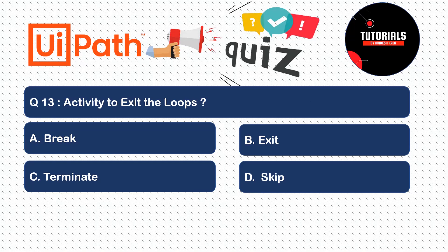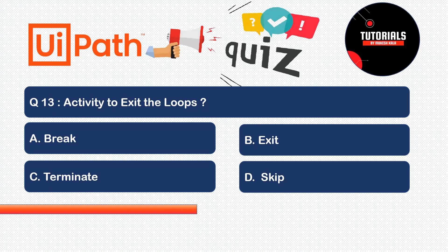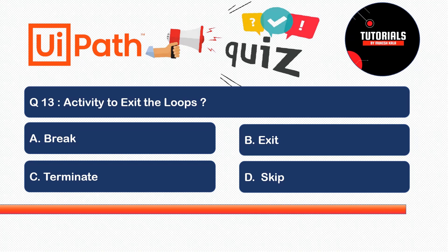Question 13: Which activity is used to exit a loop — whether For Each, While, or any other loop? Options: A) Break, B) Exit, C) Terminate, or D) Skip. The correct answer is Break. The Break activity works only within the context of loops — drag and drop it inside a loop and when the condition is satisfied, the loop will break.